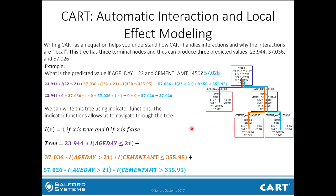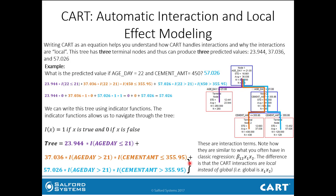So what does this have to do with interactions? These two terms in the equation are interaction terms — more specifically, two-way interactions. They're very similar to what you'll often have in regression, where interaction terms are created by multiplying one variable by another to estimate a coefficient. What we have here is a similar form: a coefficient, a first variable, and a second variable. The difference is that instead of using all of age_day, we're only using part of it — when age_day is greater than 21. The same applies to cement amount: we're only using part of it, when cement amount is less than or equal to 355.95.